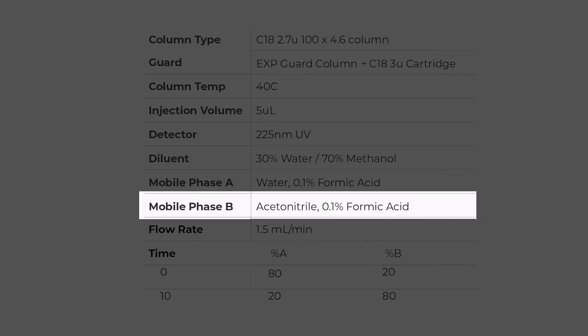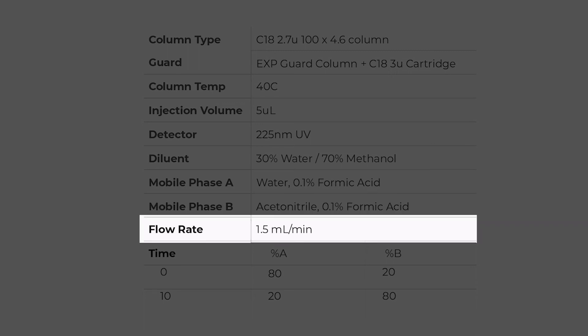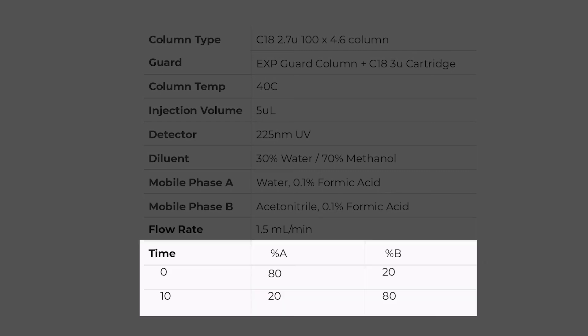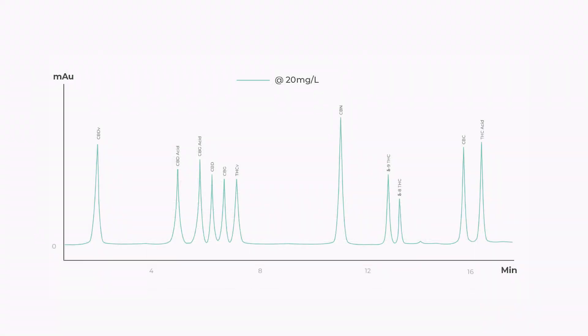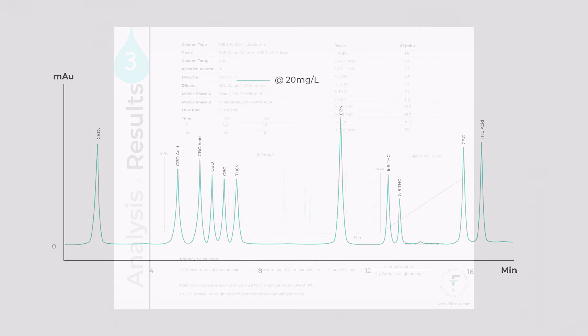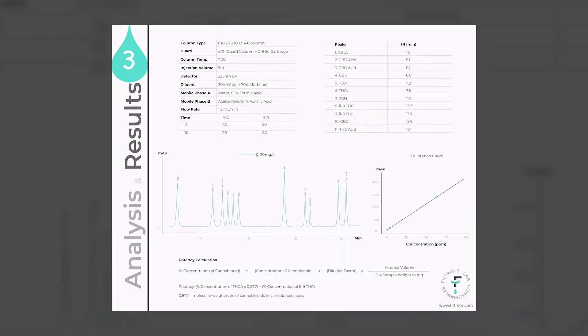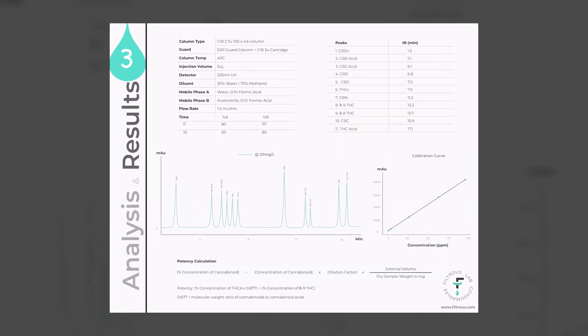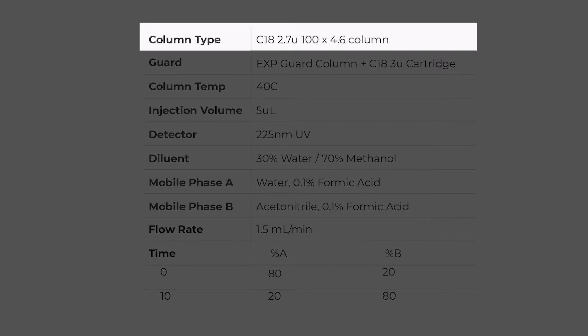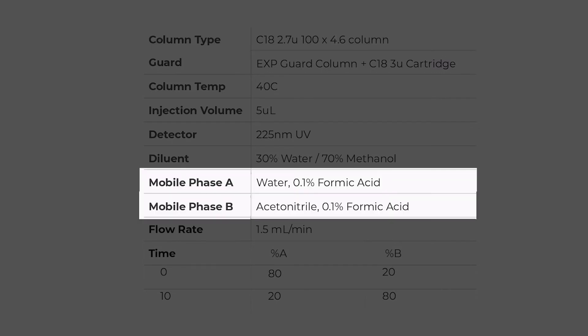The mobile phase A is 0.1% formic in water, and mobile phase B is 0.1% formic in acetonitrile. Flow rate is 1.5 mils a minute and we're doing a gradient. We're starting with 80% A and ramping up to 80% B. These are the typical results for the chromatogram. You may have to do some tweaks, but this is a good starting point. Depending on the type of column that you get, you definitely need to tweak the mobile phase conditions to get the proper separation.